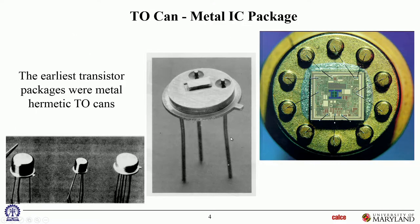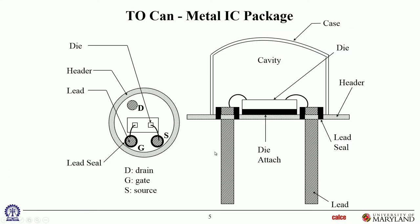Going back to the 1950s and 60s — the earliest transistor packages. We've all seen TO cans: a very simple architecture where the chip is inside a hermetically sealed metal can, and three leads — source, drain, and gate — come out as through-hole pins that go into plated through-holes in circuit cards and are soldered in place. Inside, these are cavity packages: a metal lid, substrate, die attach, and the die is face-up and wire bonded.